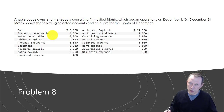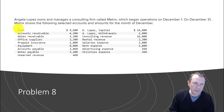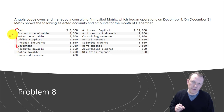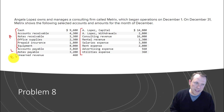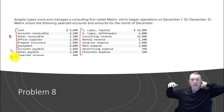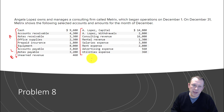An important thing to note when creating financial statements: all the accounts listed are in order on purpose. You need to know how that order works to make it easier to create the financial statements. We start at the top going from cash down to equipment — those are our assets. Then we have our liabilities, and everything beyond that point is equity. Just like the accounting equation: assets equals liabilities plus equity.